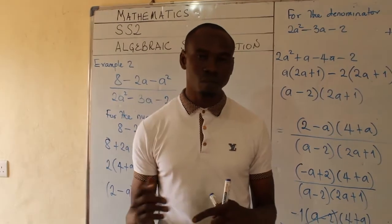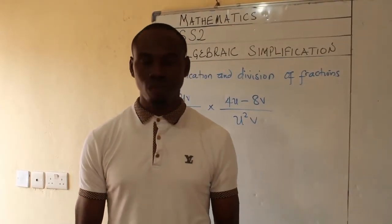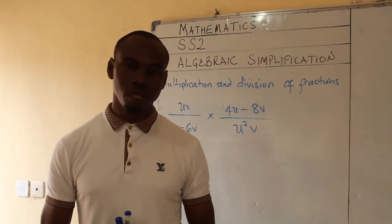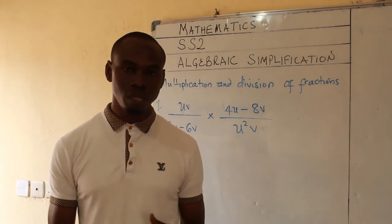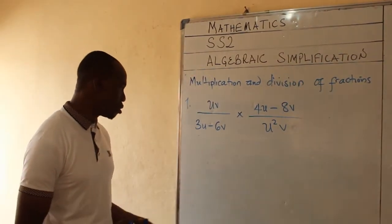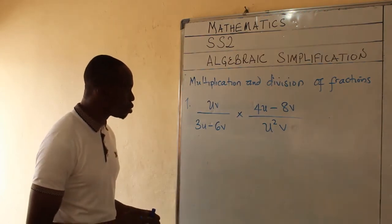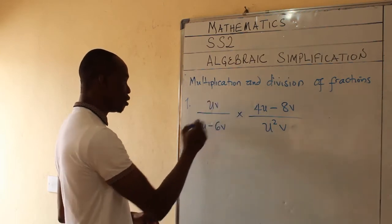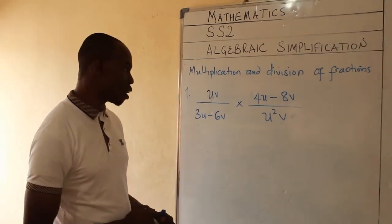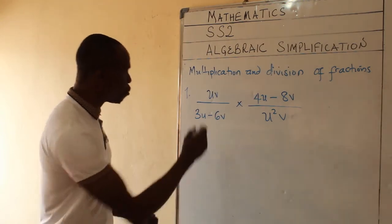Our next lesson objective is to make you know how to multiply and divide algebraic fractions. For the multiplication and division of algebraic fractions, we still need to use the factorization process. We still have to factorize fully in order to see common terms and cancel out. Not all questions are full quadratic expressions — some require only simple factorization.